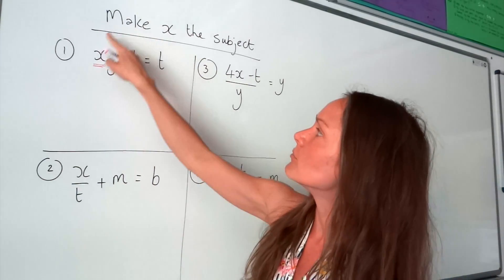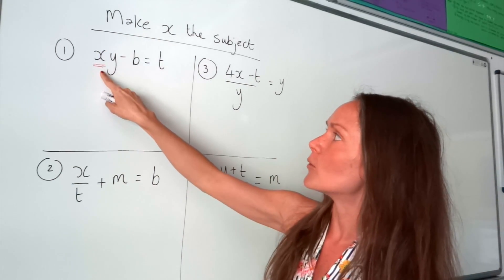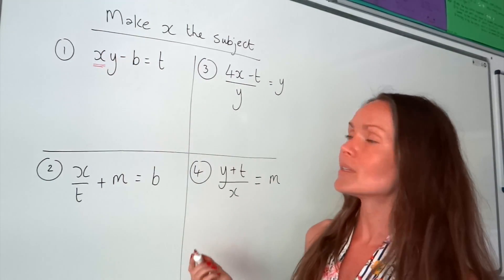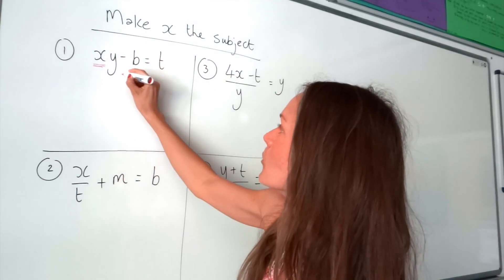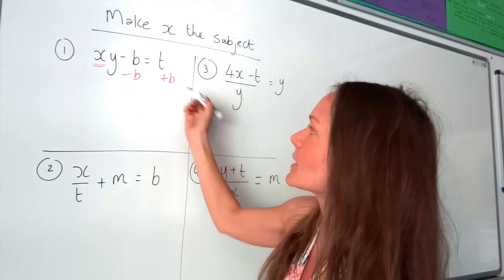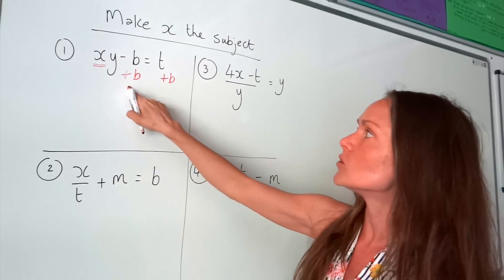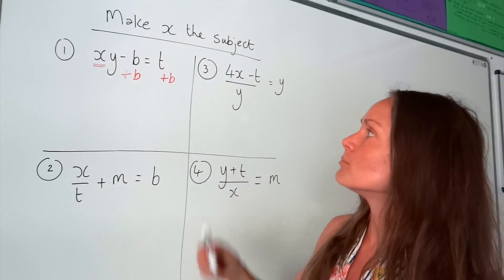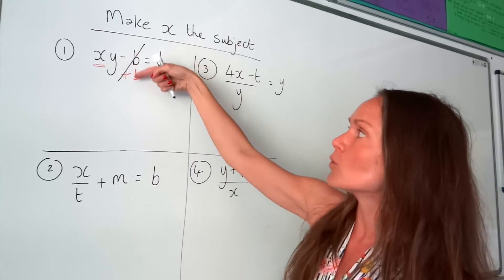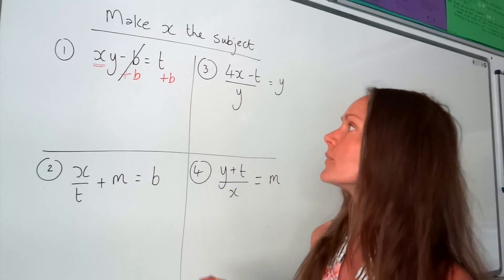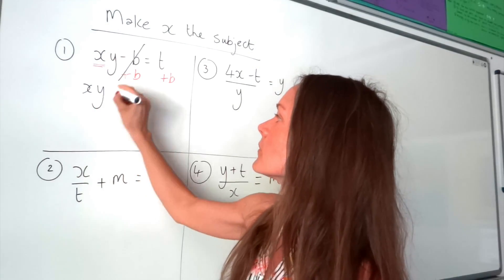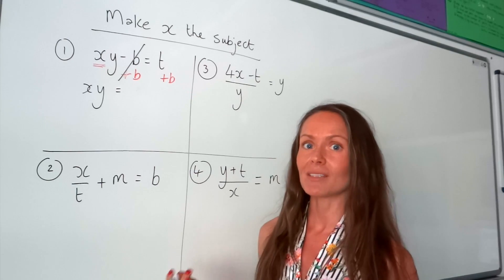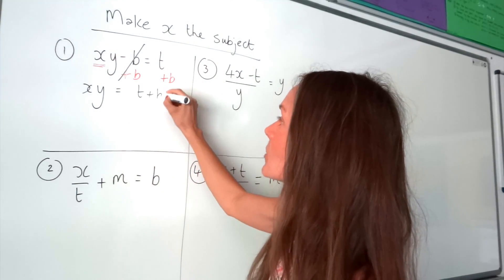When we're rearranging this to get x by itself, we leave whatever's closest to x together for the moment. So we get rid of this part first. The opposite of minusing b is to plus. If you plus b on the left-hand side of the equals, you have to do the same on the right-hand side to keep the equation balanced. On the left-hand side, minus b plus b is just 0, so they cancel each other out and we're left with 1xy. On the right-hand side, t plus b — we can't actually work that out because they're different letters, so we just leave it as t plus b.